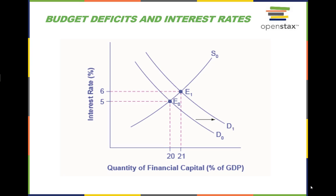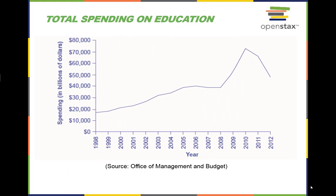The higher interest rate is one economic mechanism by which government borrowing can crowd out private investment. This graph shows that government spending on education was continually increasing up until 2006, where it leveled off until 2008, when it increased dramatically. Since 2010, spending has steadily decreased. This type of government spending can increase human capital and increase production in the economy, though it often leads to deficit spending.